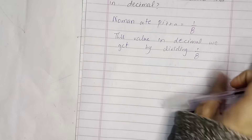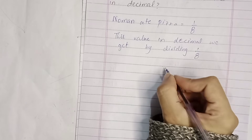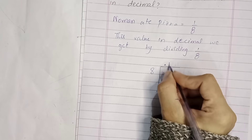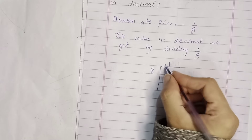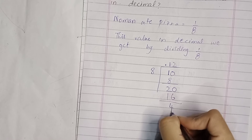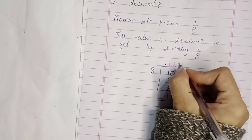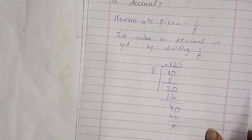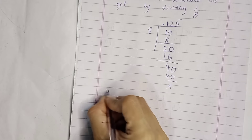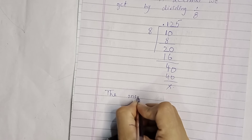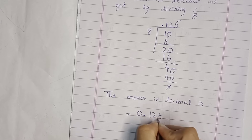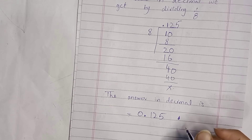1 by 8 — we will divide 1 by 8. First we put a decimal point, then we add 0. Eight into 10 is 1 remainder 2. Then because of the decimal point we add 0 — eight into 20 is 16, remainder 4. Then add 0 again — eight into 40 is 5, remainder 0. So 0.125 is our answer. The answer in decimal is 0.125.